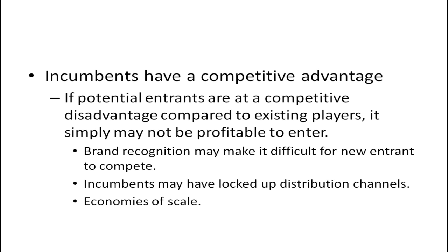Incumbents may also have locked up distribution channels. This is very true of many food products, including beverages. It's not really hard to make a cola beverage — it's water, carbonation, sweetener, and some flavor. However, the problem is who's going to put it on their shelves. There's only so much shelf space in grocery stores and convenience stores, and they're not likely to move existing products to put your brand in. You'd practically have to give your product to the supermarket for free for a while. There may also be economies of scale — a small company simply can't produce enough to get its cost structure down to compete with much larger incumbents.